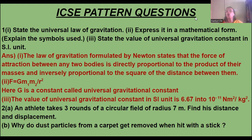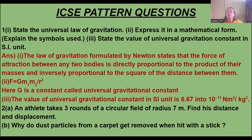The answer is the law of gravitation formulated by Newton. It states that the force of attraction between two bodies is directly proportional to the product of their masses. Whatever mass this one has, whatever mass this one has — if you consider these two as bodies, the product of their masses is directly proportional to the force of attraction between them. But it is inversely proportional to the square of the distance between them. Therefore we can write F is directly proportional to M1 into M2 divided by R square.